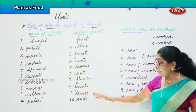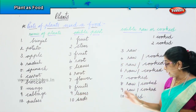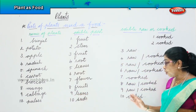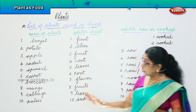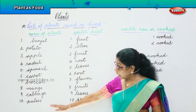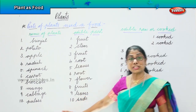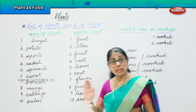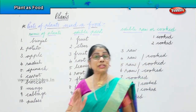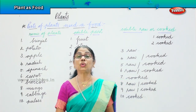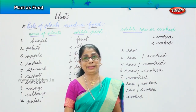Cabbage — they are the leaves and they can be eaten raw and they can be cooked too. Pulses — they are the seeds of a plant and they should be cooked only.